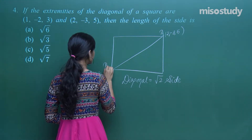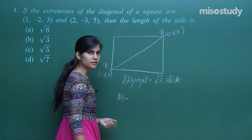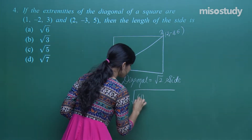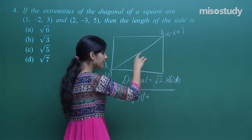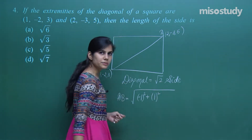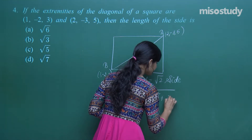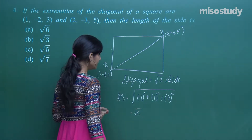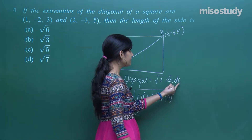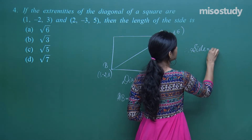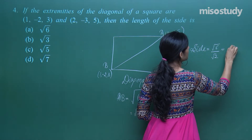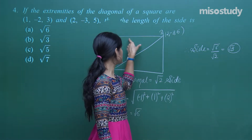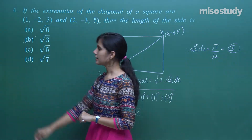Calling these points A and B, the diagonal length AB = √[(1−2)² + (−2+3)² + (3−5)²] = √[1 + 1 + 4] = √6. The side length is diagonal/√2 = √6/√2 = √3. So each side is of length √3.